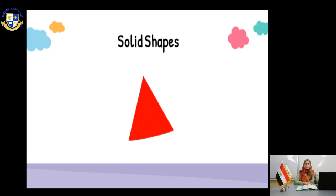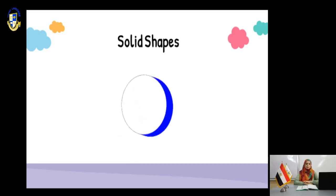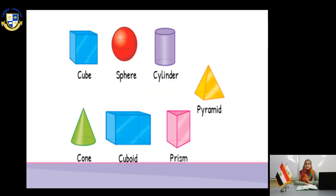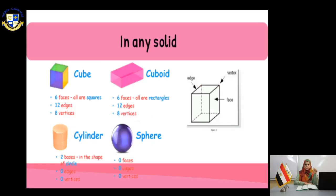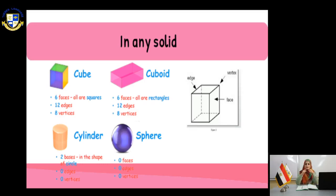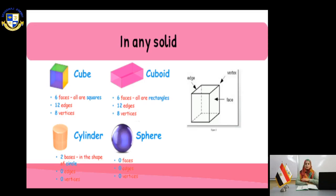In any solid, you have edge, face, and vertex. What is the meaning of these three words? The vertex is always a point — a point where two lines meet. A vertex is a point. An edge is a line that you can see. The face is what you see when you first look at the shape.